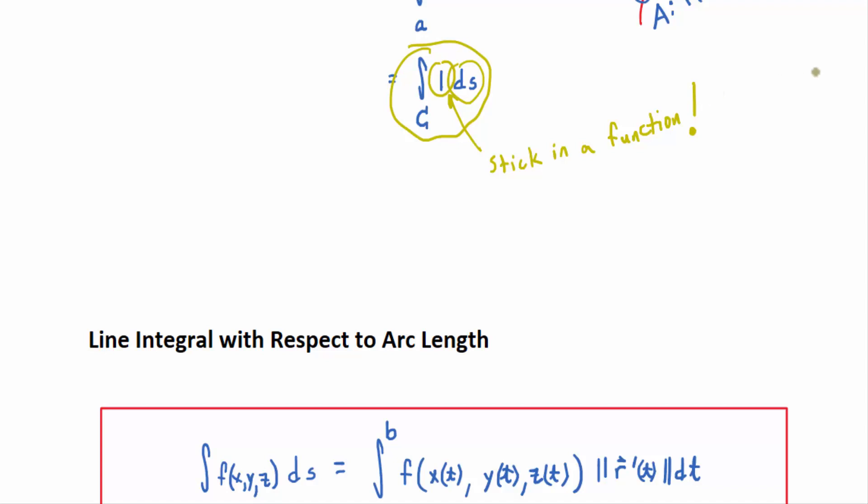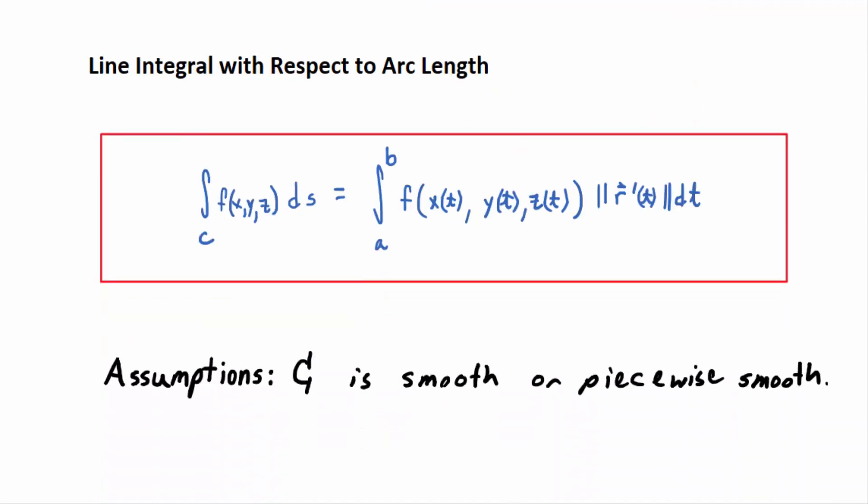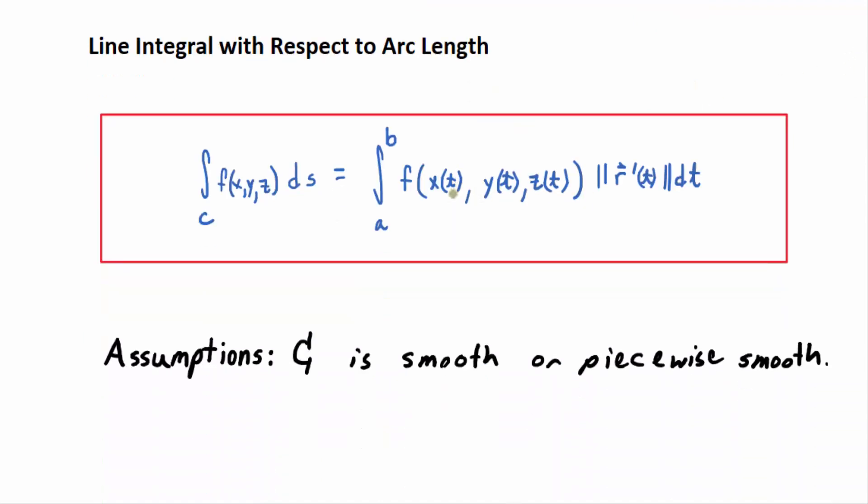However, if you stick a function in there, then it becomes something else altogether. So in order to figure out what it is, you have to figure out what f of x, y, z times ds would represent in the infinitesimal. And then the integral means we think of it as a sum, even though it's a limit of a Riemann sum. So what could it represent?